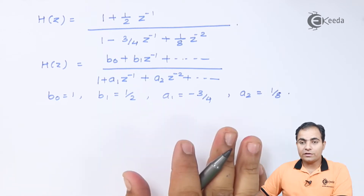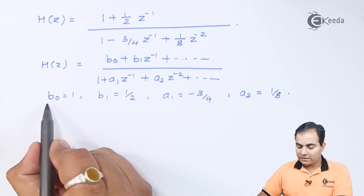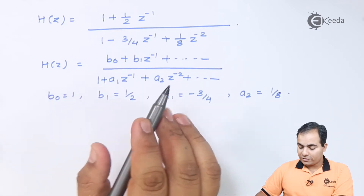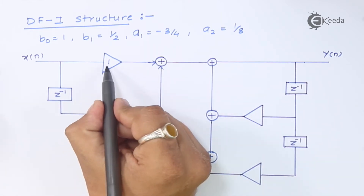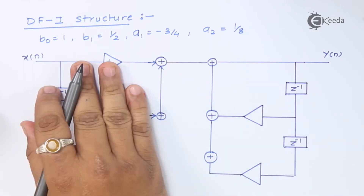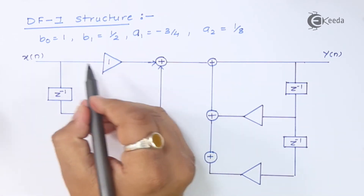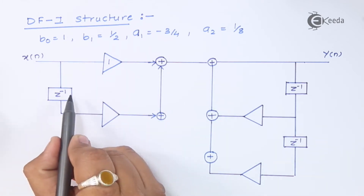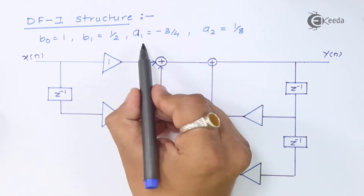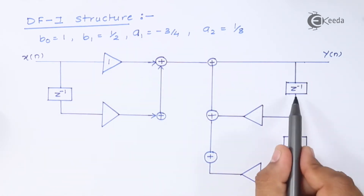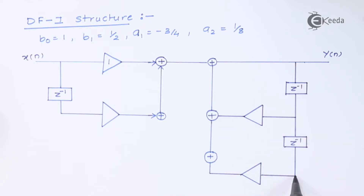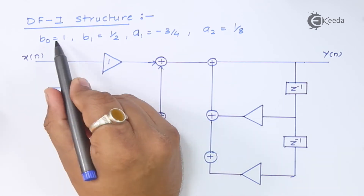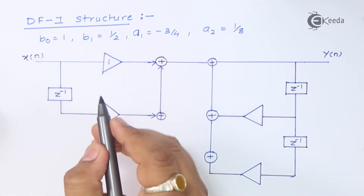Knowing the DF1 structure, we place all the a and b values onto it. In the DF1 structure, b values are placed on the left-hand side and a values on the right-hand side. We have b₀ and b₁, so we need one delay element on the left, and a₁ and a₂, so we need two delay elements (z⁻¹ in series) on the right. The b₀ value of 1 is placed in the first triangle, and b₁ value of 1/2 is placed at the next node.